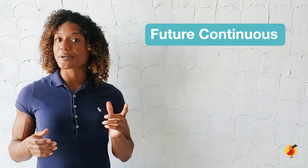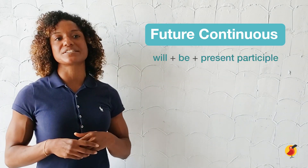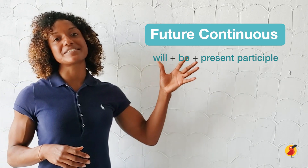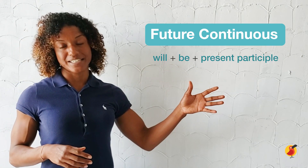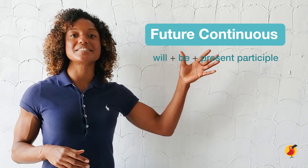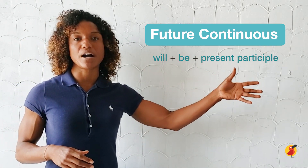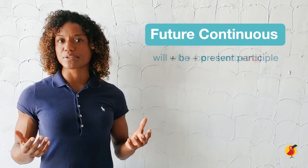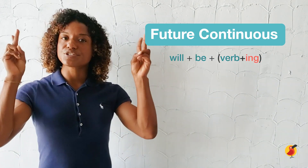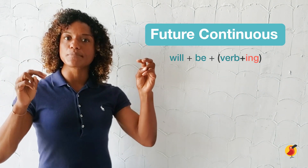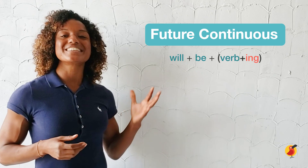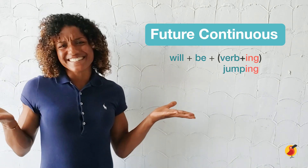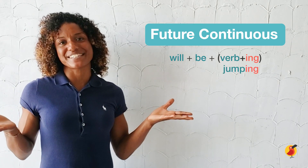It is formed using the construction will plus be plus the present participle. The present participle is the root verb with the -ing ending, like jumping.